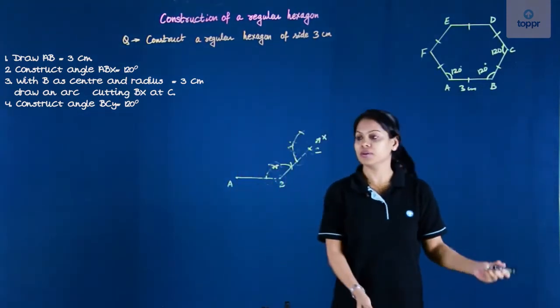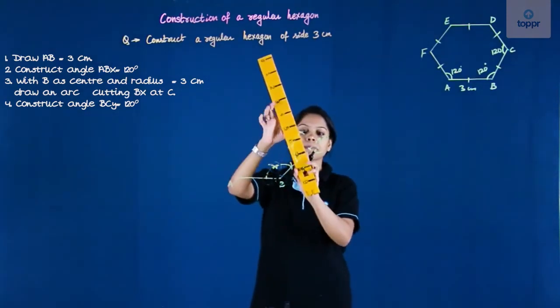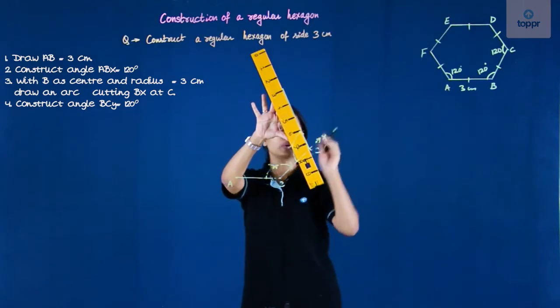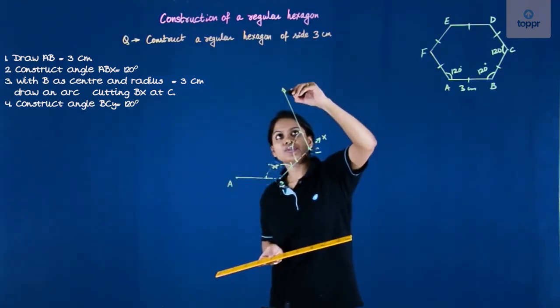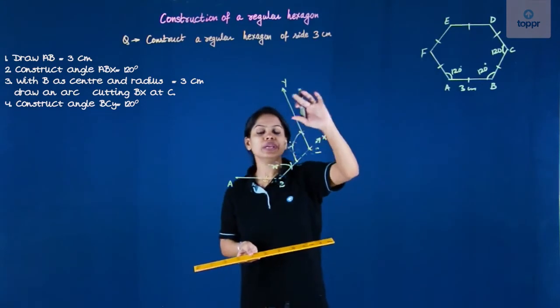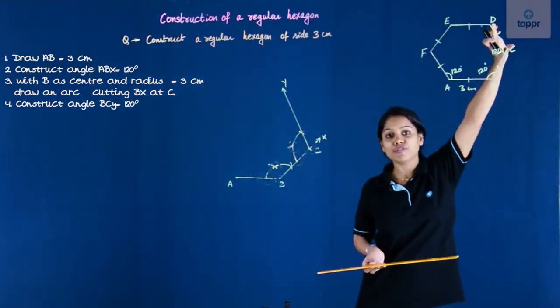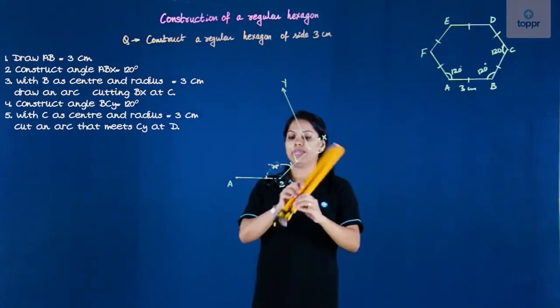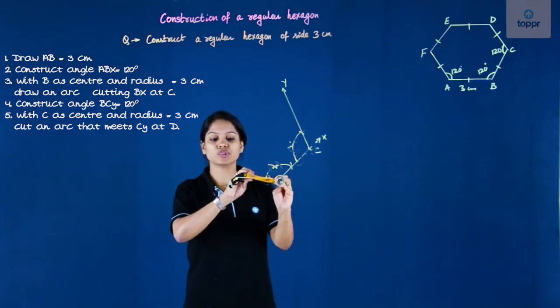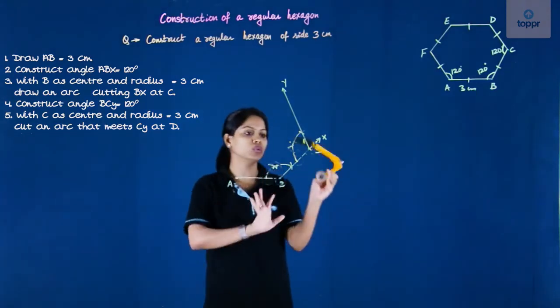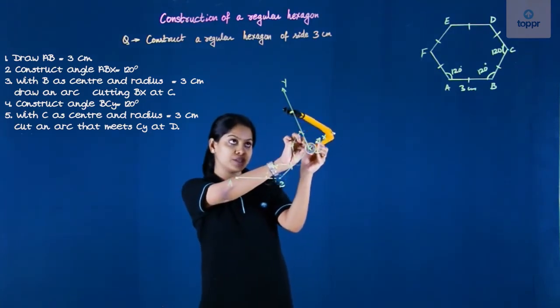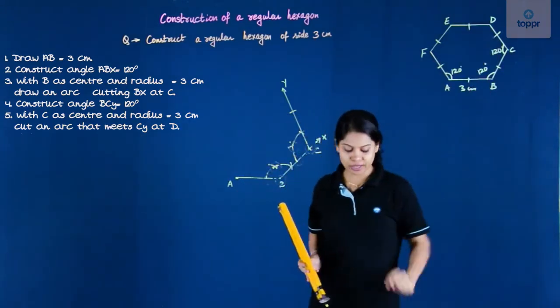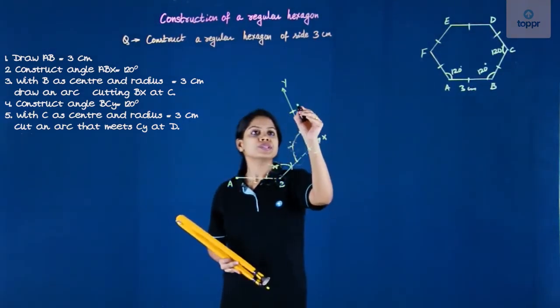After that, because I haven't located the next point D yet, I will name this ray as CY. So D lies somewhere over here and D is at a distance of 3 centimeters from the point C. So I will measure 3 centimeter again from here. I can measure AB or BC or from the ruler. You have plenty of options there. So I will cut an arc. So this point is the point D, the next vertex after C.